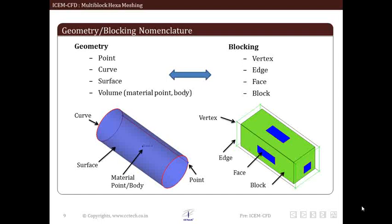The terminologies like vertices, edges and faces are generally associated with mesh entities—in this case, blocks—while point, curve and surfaces are usually associated with geometries. So in short, what we should remember is: point, curve, surfaces and volumes are nothing but geometrical entities, whereas vertex, edges, faces and block are nothing but blocking or mesh entities.